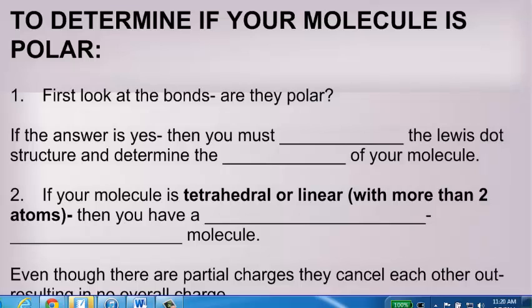To determine if your molecule is polar, first, look at the bonds. Are they polar? If the answer is yes, then you have to draw the Lewis dot structure and determine the shape of your molecule.